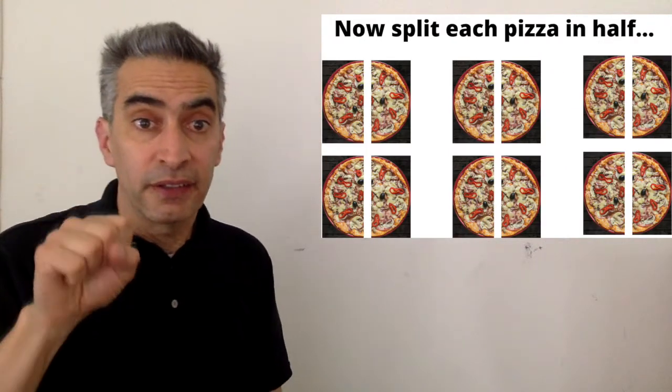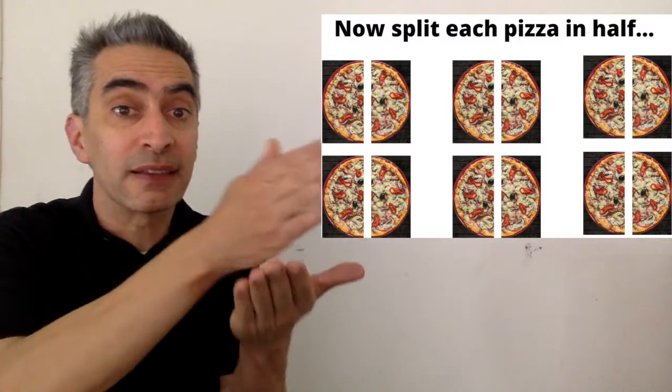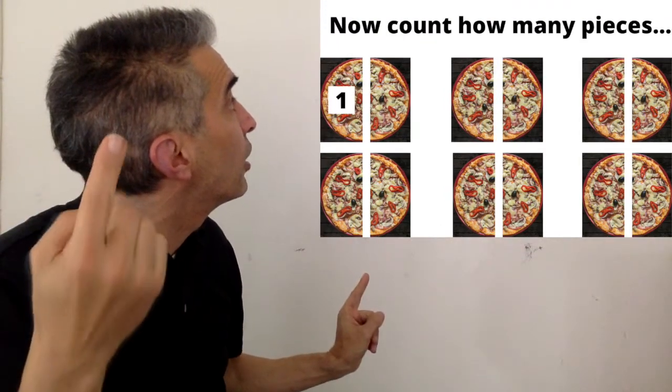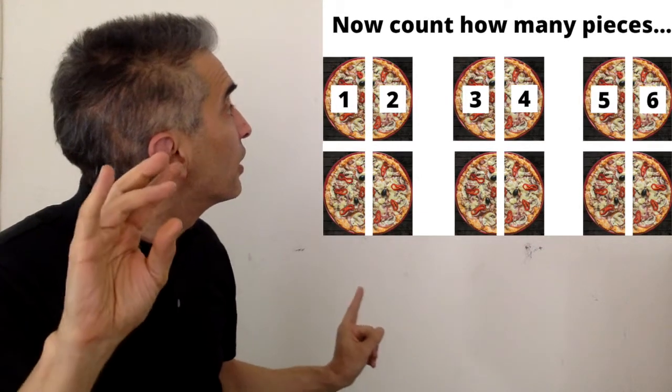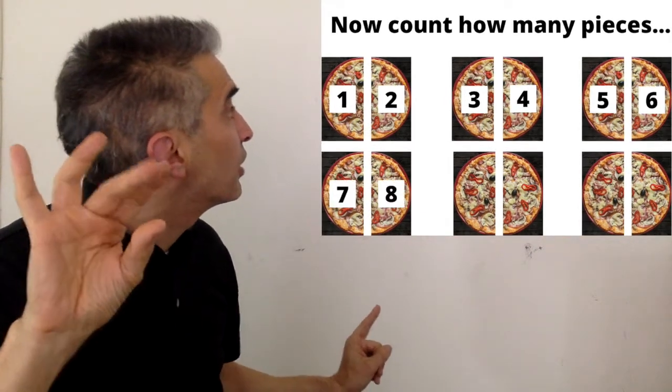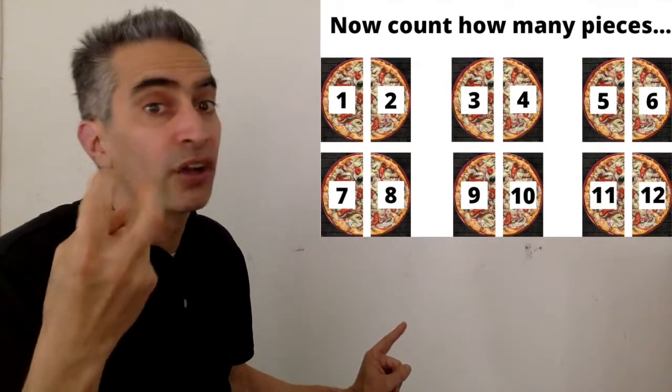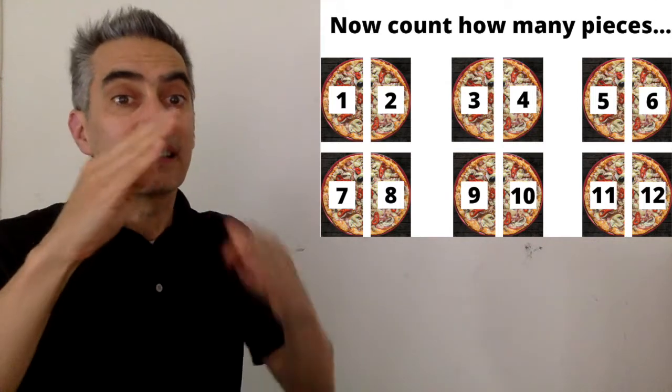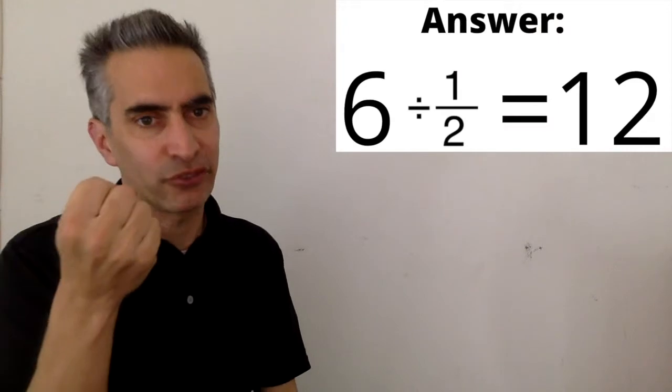Now, what do we do? Count each slice. One, two, three, four, five, six, seven, eight, nine, ten, eleven, twelve. Twelve. Six divided by one half equals twelve.